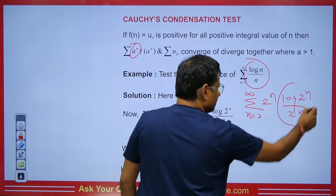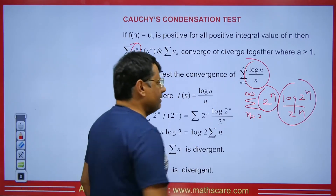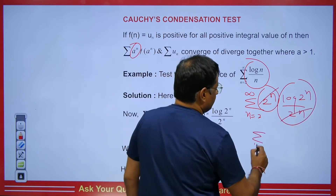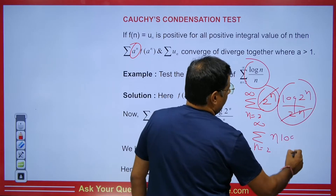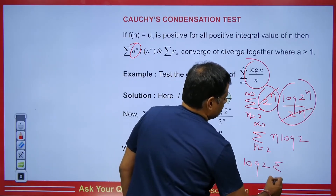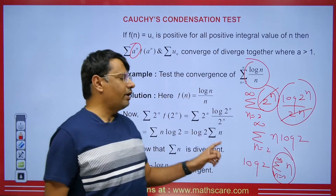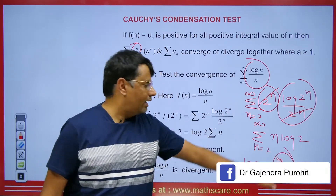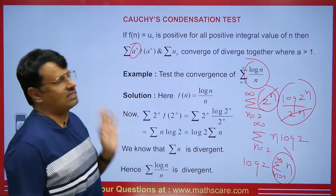We have f(2^n) and 2^n. The 2^n terms will cancel each other out. What we get is summation n = 2 to infinity. The power moves in front, so we can write this as n times log 2. Taking out log 2, we get summation n = 2 to infinity of n. We know that this is a monotonically increasing, unbounded series — so it will be divergent. And if this is divergent, then the original series is also divergent, because both have the same behavior.